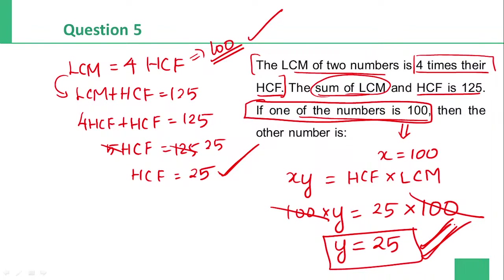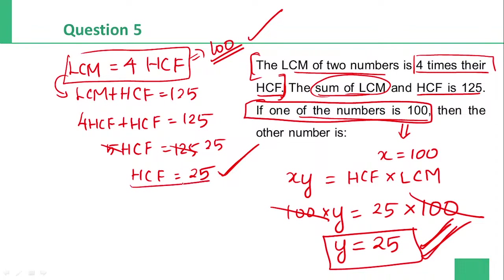To summarize: from LCM = 4 times HCF and sum of LCM and HCF = 125, we derived HCF = 25 and LCM = 100. Using the product formula with one number as 100, we found the other number is 25.